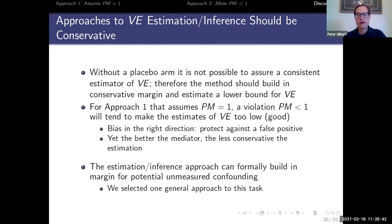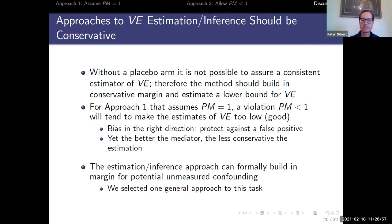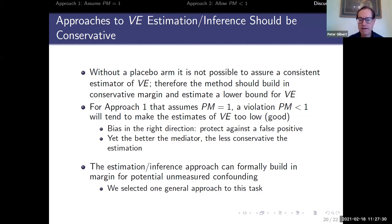To wrap up: for attempts at studying prevention VE versus counterfactual placebo, estimation and inference should formally build in some conservatism — which we've tried to do by accessing the Ding and VanderWeele paper and translating their general bias approach to our setting. For Approach 1, a feature I like is that an imperfect mediator tends to make our estimate of vaccine VE too low, so the bias is in the right direction if what we care about is protecting against a false positive. This also highlights that the better the mediator, the less conservative the estimation will be, so we would want to know the marker probably mediates a reasonably high proportion of the efficacy.